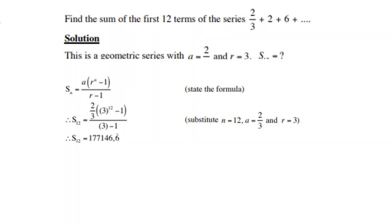Let's look at the first example: find the sum of the first 12 terms of the series 2/3 + 2 + 6 + ... This is geometric because 2 ÷ (2/3) = 3 and 6 ÷ 2 = 3, so r = 3. We prefer the first formula since r is a whole number. Replace a with 2/3 and r with 3, then use your calculator to get the answer: 177 147,6 recurring.